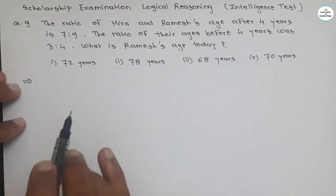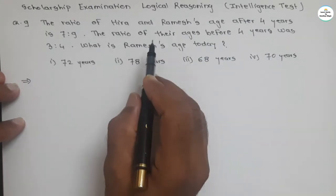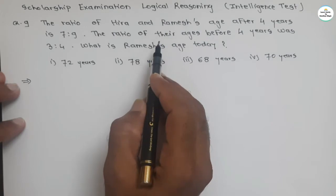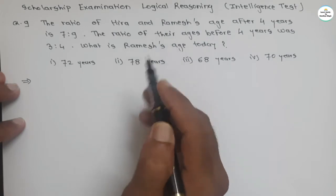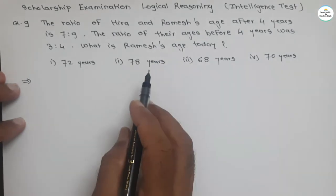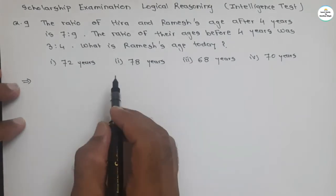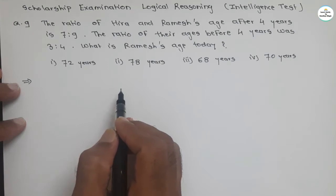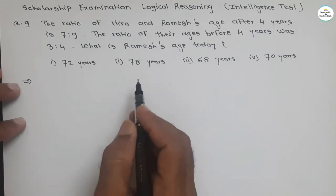Four options are given. Questions of this type can be solved using a small trick, but here I am going to solve the question thoroughly with basic steps — to understand the concept very clearly.